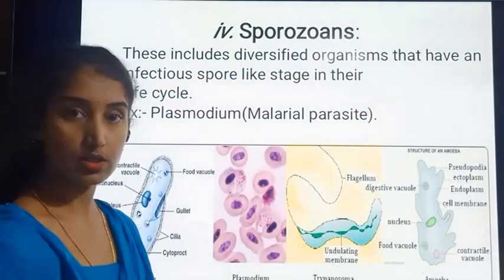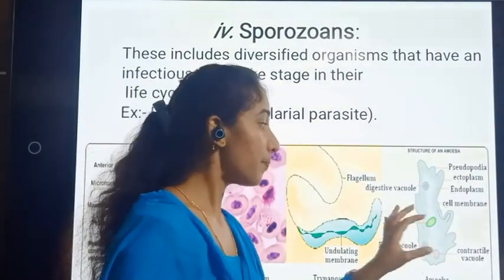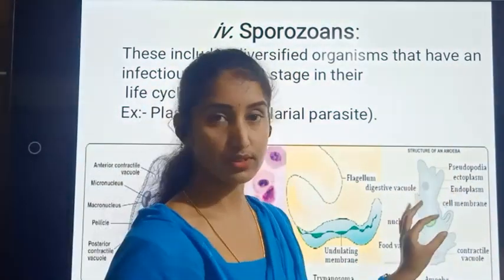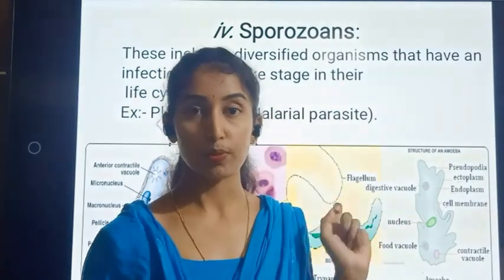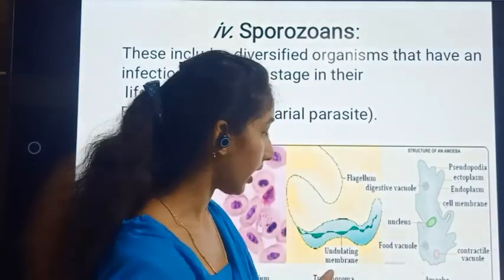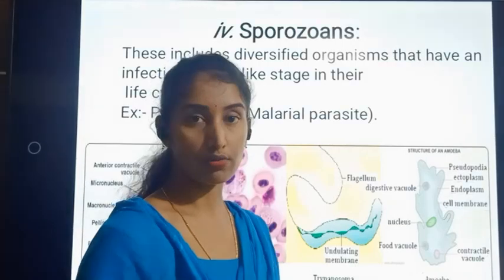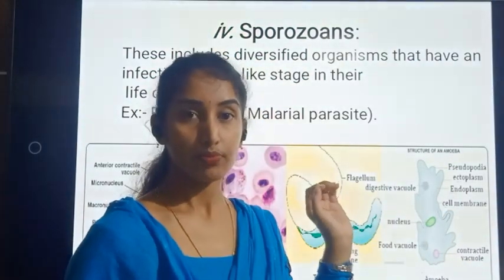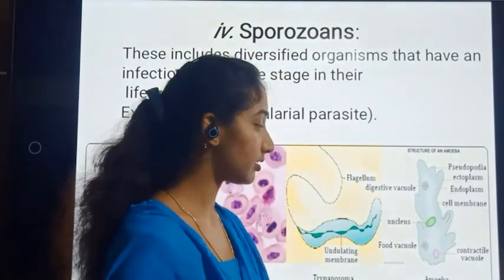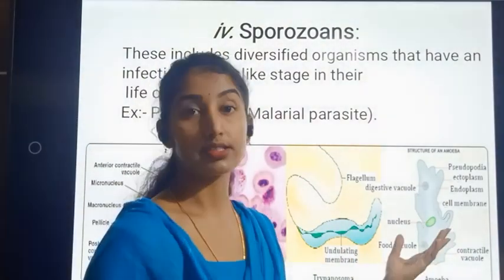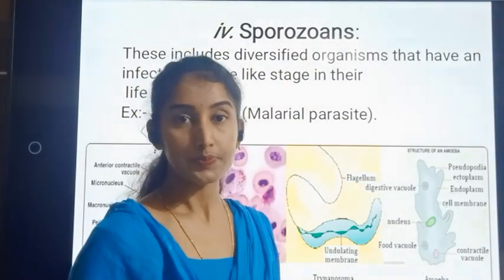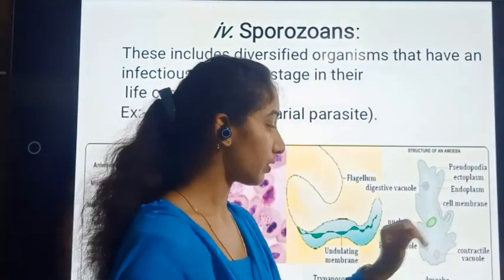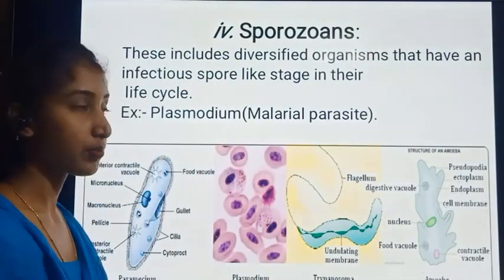Throughout the plasma, we also find a dark-colored structure — the nucleus, which encloses the genetic material. There is also a food vacuole, a contractile vacuole, and a digestive vacuole. This single cell has a very specific structure to perform various functions, making Amoeba one of the best examples for amoeboid protozoans.